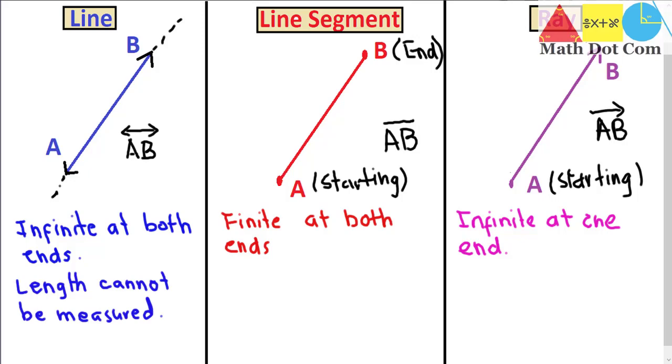While a line segment has a starting and ending point and it is finite in length, so it can be measured. Lastly, a ray is going infinitely on one side. So in a similar manner just like the line, its length also cannot be measured. So that's all from the difference between line, line segment, and ray. Thank you.